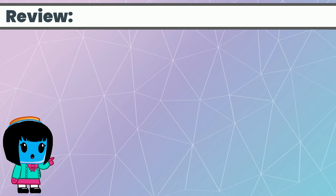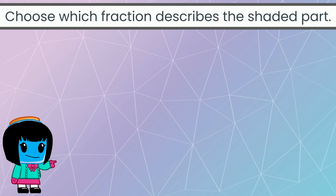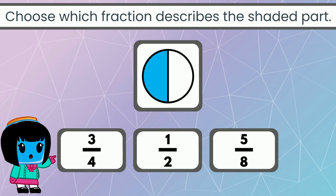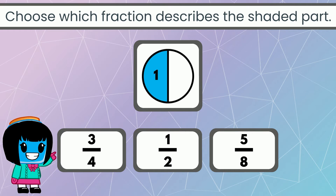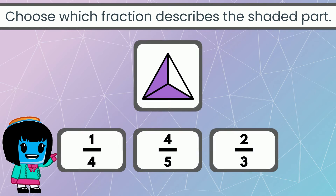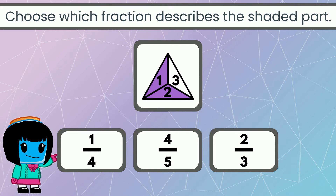To review what we've learned so far, choose which fraction describes the shaded part in each figure. The circle has one shaded part out of two, so the correct fraction is one half. This triangle has two shaded parts out of three, so the fraction is two thirds.